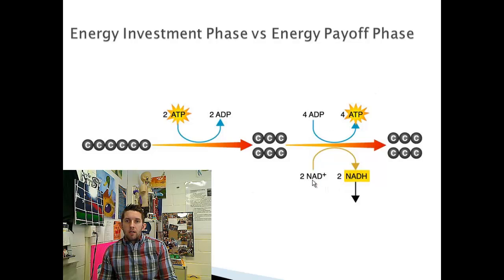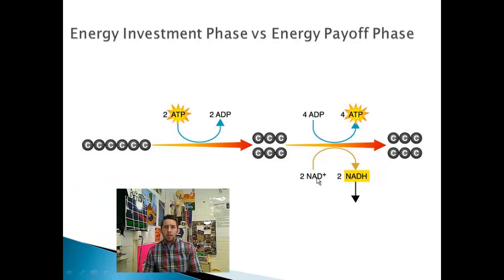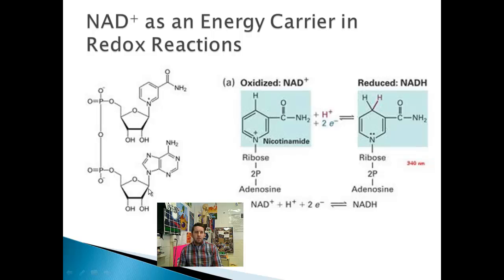We also get two NADHs. This is NAD, our coenzyme, which carries energy to the electron transport chain. Let's look at NADH a little bit further. This is NAD, nicotinamide adenine dinucleotide. This might look familiar to you. We have a five-carbon sugar here, this is a ribose sugar. We have a phosphate group and we have a nitrogenous base.